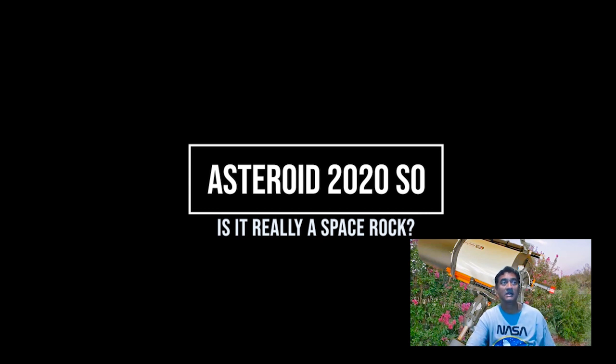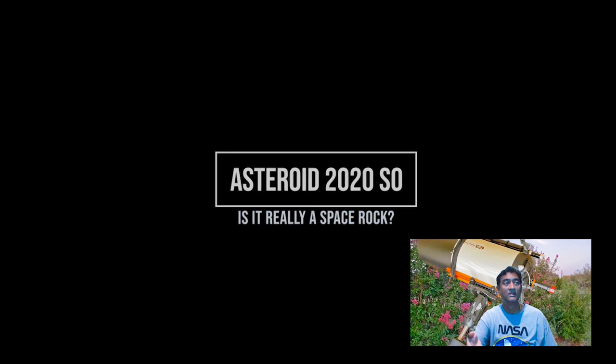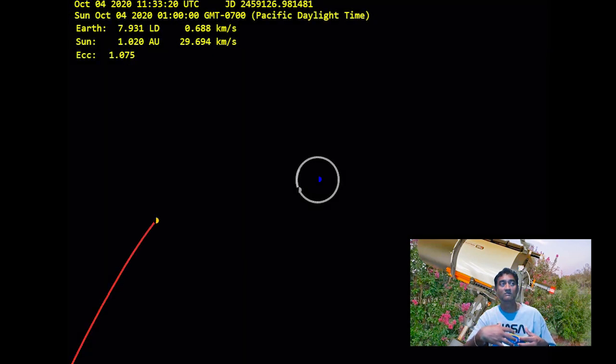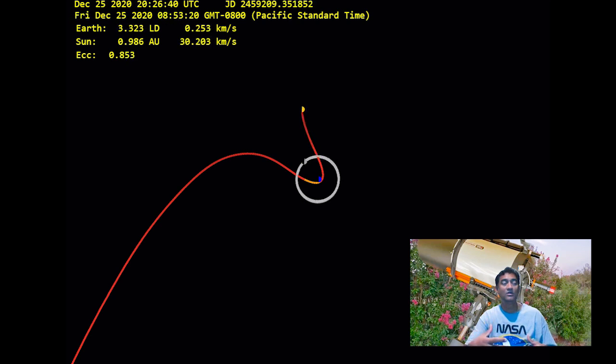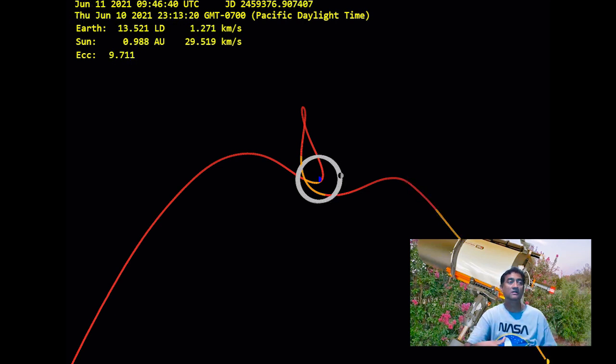There is a name given to this object. Right now, based on the orbit, we don't know whether this is a near-Earth asteroid or an artificial object.